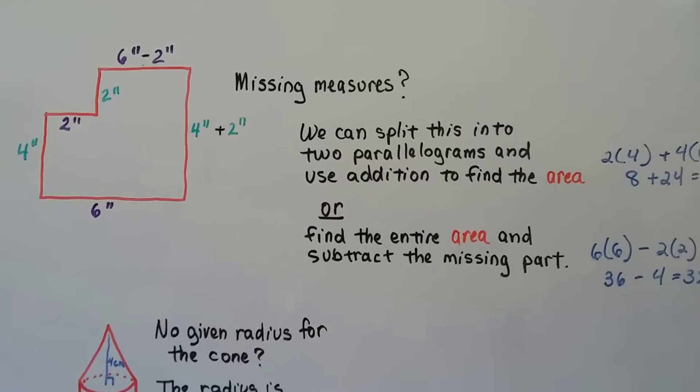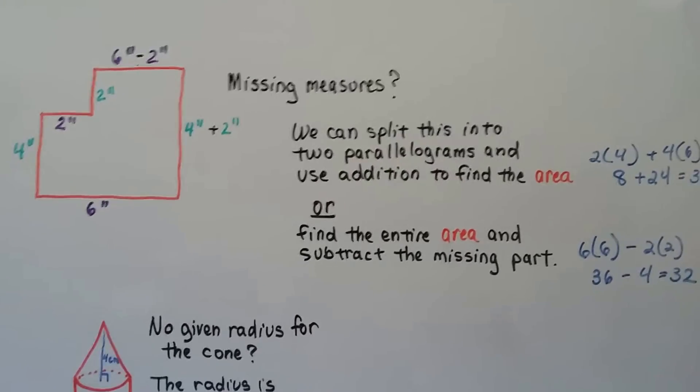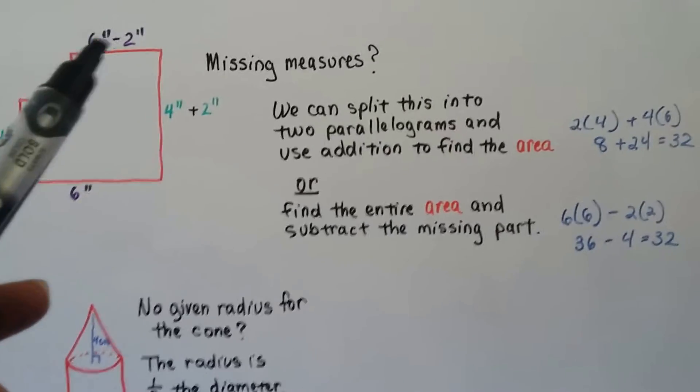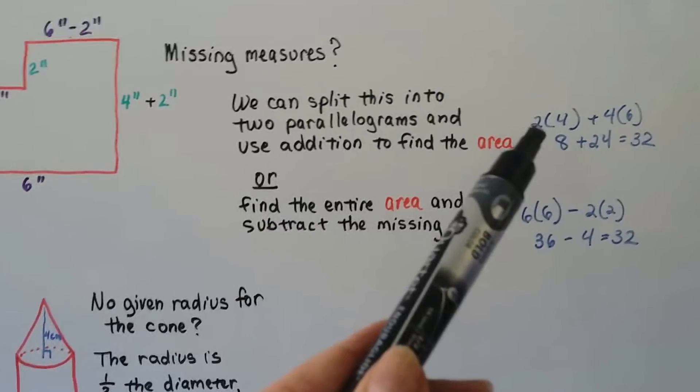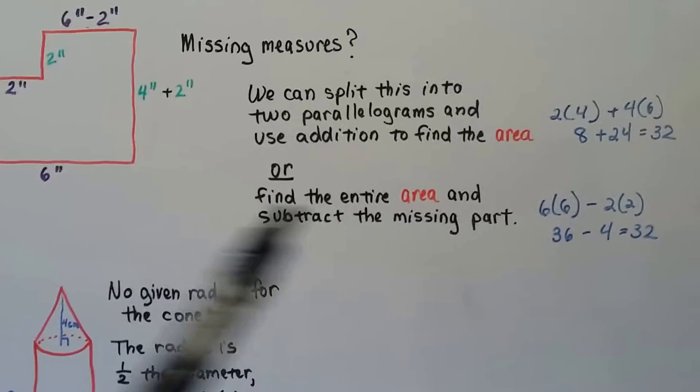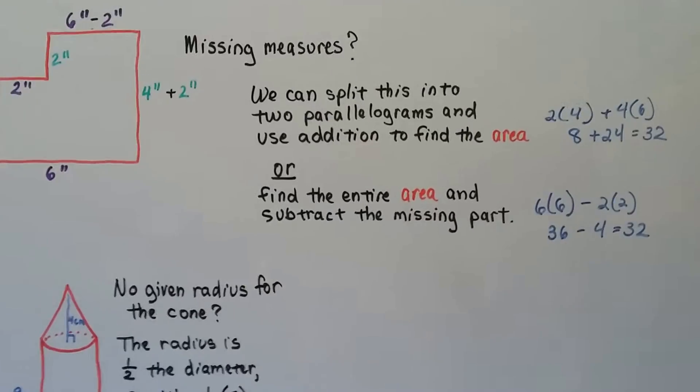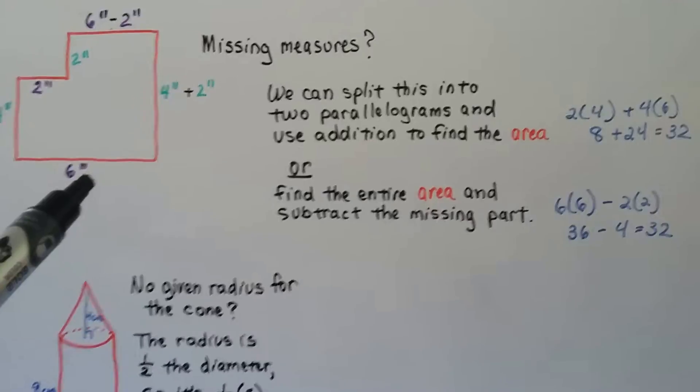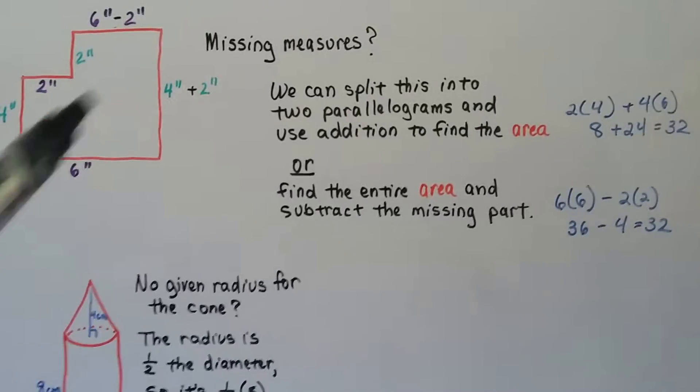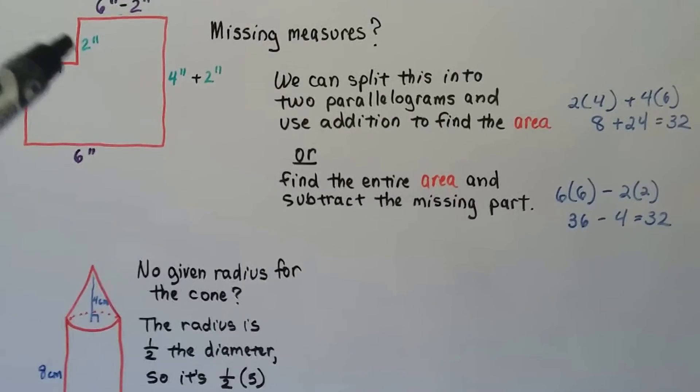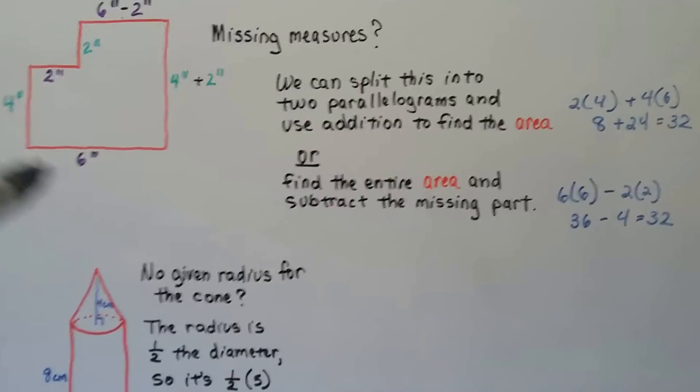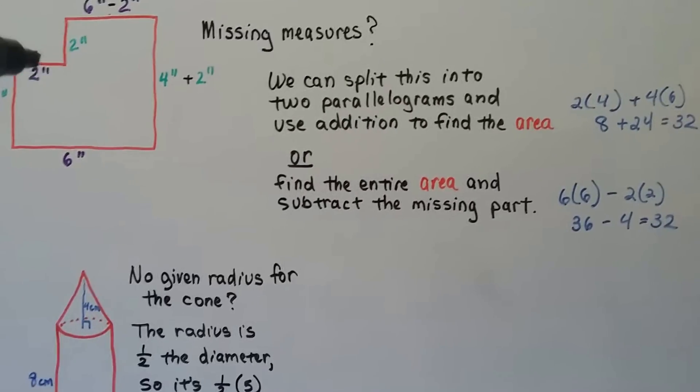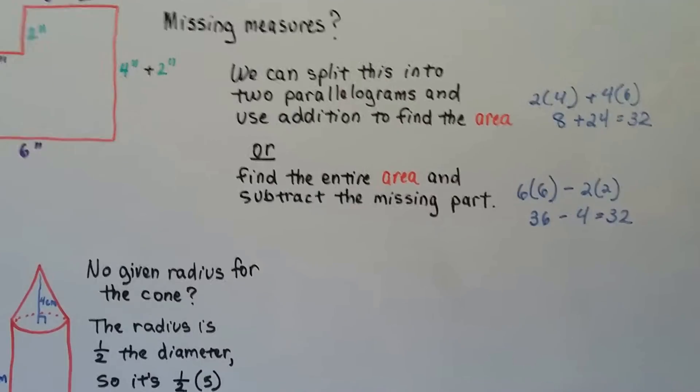We can find the area of this by using either addition or subtraction. For addition, we can split this into two parallelograms, drawing a line across this way, and do 2 times 4, which is 8, and adding it to 4 times 6, which is 24. And that'll give us 32 square inches for our area. Or, we could do the 6 times 6 is 36, find the area for this entire thing, as if this wasn't missing, so it'd be 36 for the whole perfect square, and then subtract the 2 times 2. That'll give us 32, the same thing.